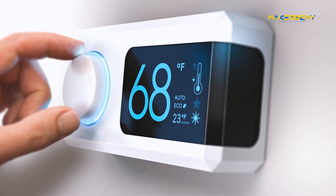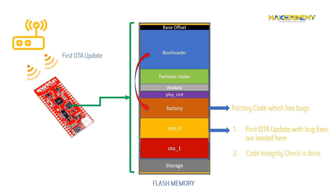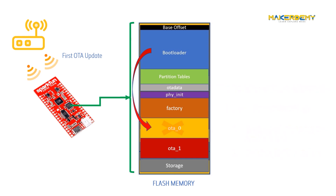Let's take the thermostat example again. The current code which is buggy is running in the factory partition. When a new code is sent via Wi-Fi to the flash memory, the code will first be saved in the OTA_0 partition. A code integrity check will be done in this OTA partition to confirm whether the code is usable or not. Later, the OTA data partition will be updated to point the bootloader to use the OTA_0 partition as the boot partition instead of the default factory partition. If by any chance the code in OTA_0 partition faces some errors, the ESP32 will automatically roll back to use the default factory partition code by resetting the boot flag.